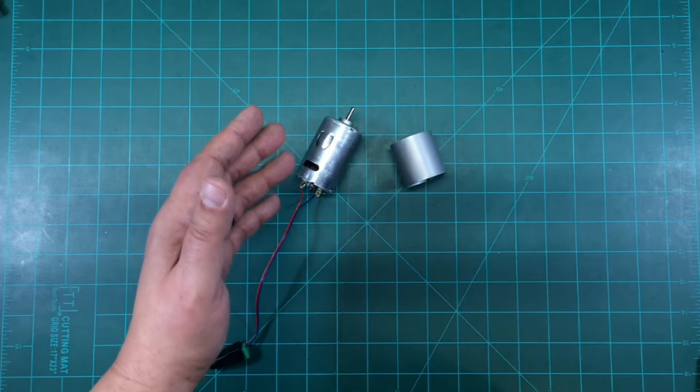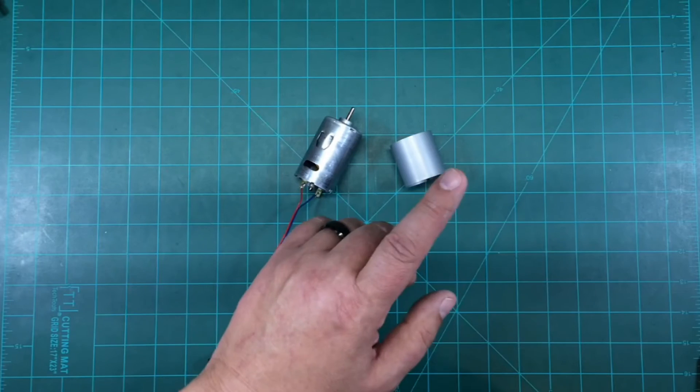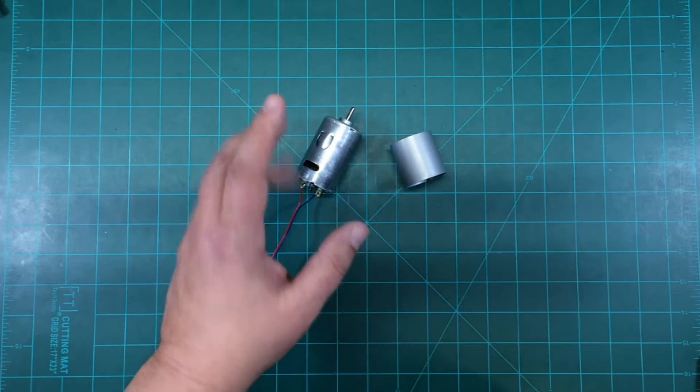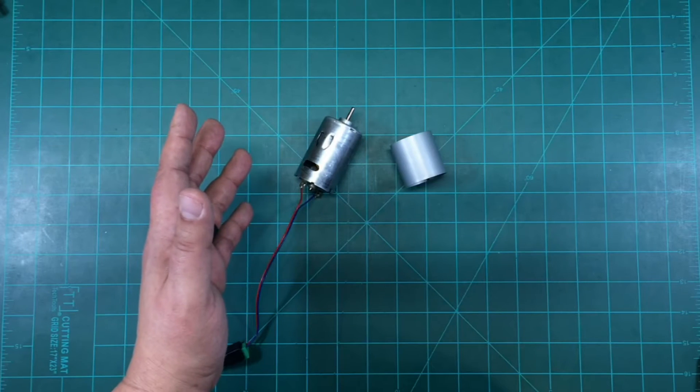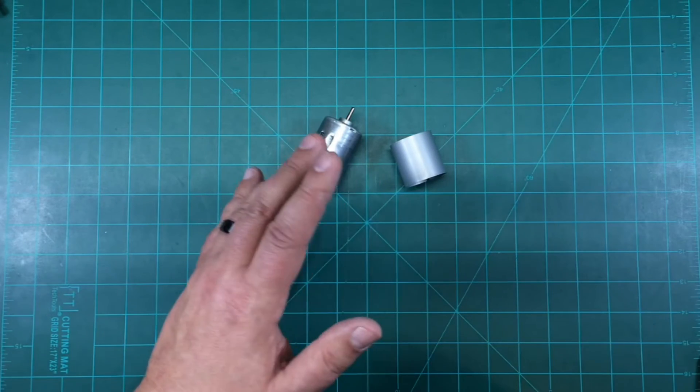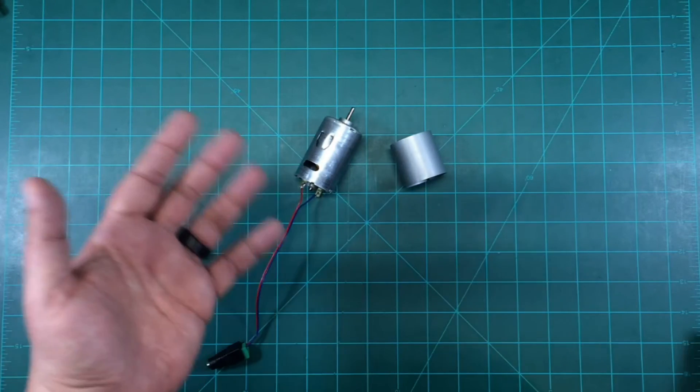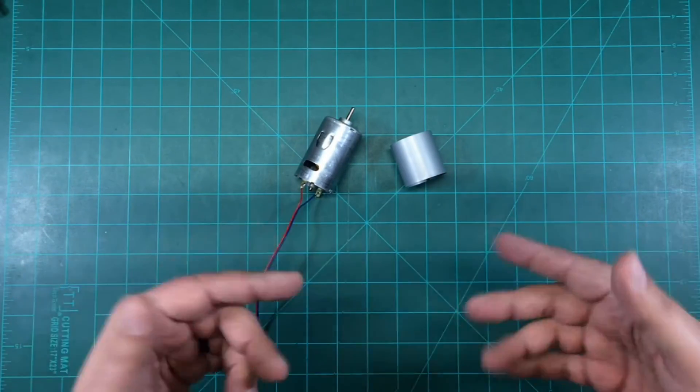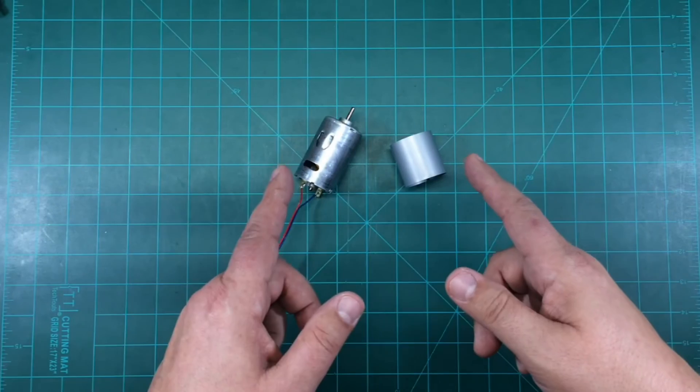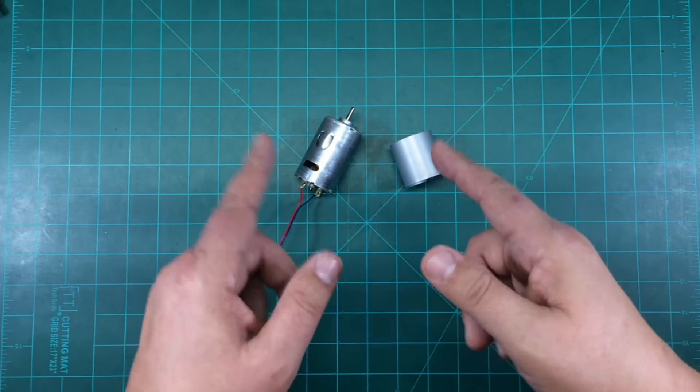Now there's a lot of discussion out there that adding the flux ring actually decreases the speed but increases the torque, and removal increases the speed but reduces the torque. Either way, what I want to do is some experimentation. Does this really work? Is it just a placebo? I don't know. So we're going to do some testing. I'm going to set up a test jig, so I'll be back in a second.